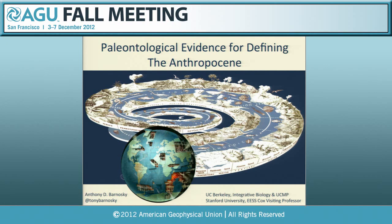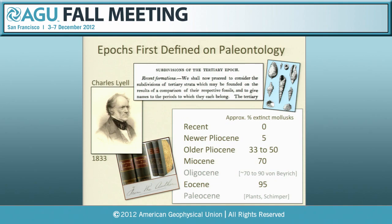Good morning, everybody. There are three points I want to make about paleontology with respect to the Anthropocene. The first is that if we're going to really define the Anthropocene as a formal geological epoch, paleontology is absolutely essential — because all of the other epochs ultimately were defined on paleontological evidence. Going right back to Lyell with their original definitions, which were defined on the percentages of extinct mollusk species in each of the strata of interest. Lyell originally set up the Eocene, Miocene, older Pliocene, newer Pliocene, and the recent, defined on those percent extinct species.